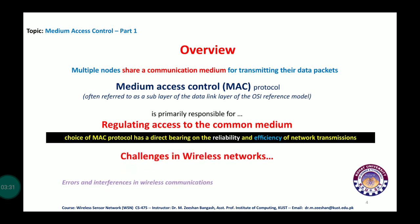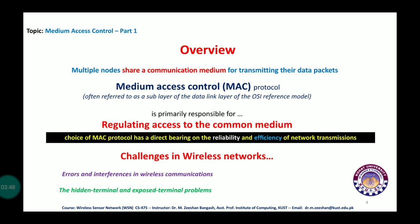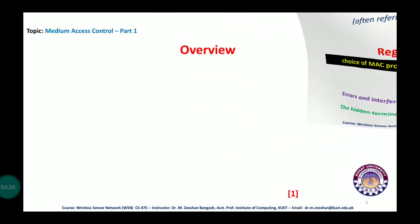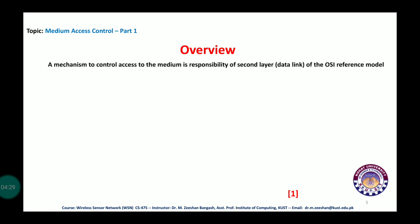The challenges in wireless networks include interference and errors inherited from the wireless nature, as well as hidden terminal and exposed terminal problems. Other concerns are signal fading, simultaneous medium access by many nodes — which is more problematic in WSNs with thousands of sensors deployed — and asymmetric links, where communication is unidirectional rather than bidirectional.